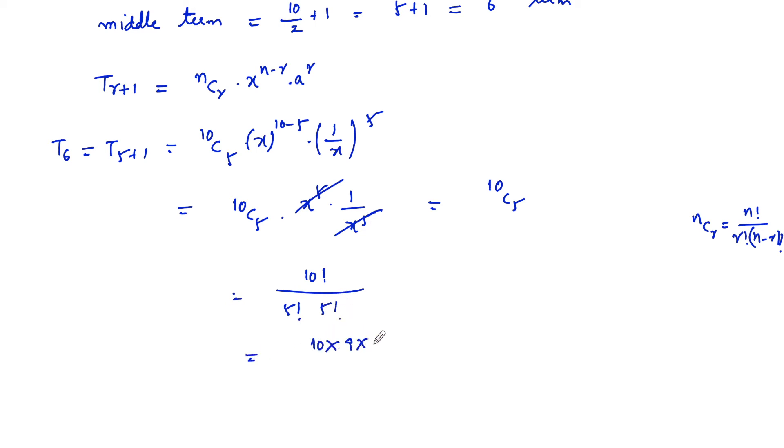That is 10 into 9 into 8 into 7 into 6 into 5 factorial upon 5 into 4 into 3 into 2 into 1 into 5 factorial. So we can cancel this 5 factorial.